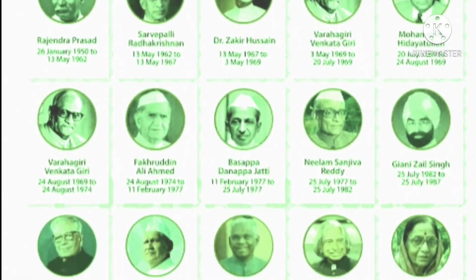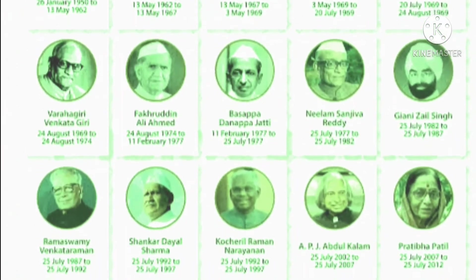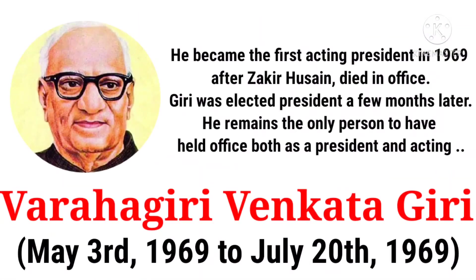Apart from these 14 presidents, three acting presidents have also been in office for a short period of time. V.V. Giri was the first Acting President of India from 3rd May 1969 to 20th July 1969, after Zakir Husain died in office. Giri was elected President a few months later and remains the only person to have held office both as President and acting president.